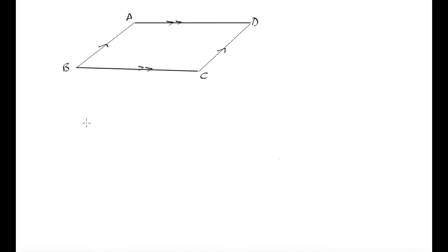In the next few videos, we're going to be talking about quadrilaterals. Quadrilaterals are shapes in which we have four line segments that are joined together. Over here we have a type of quadrilateral that is known as a parallelogram.